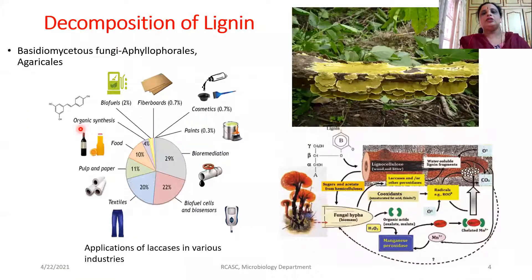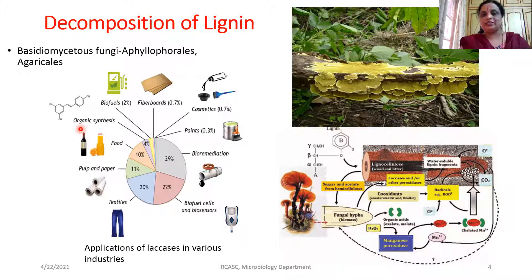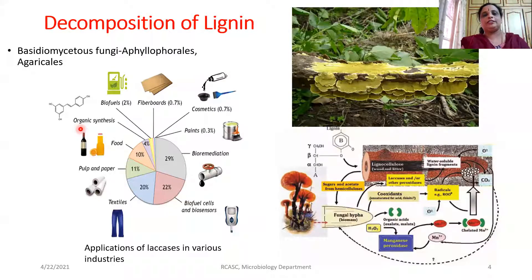We also studied the role of lignin. Lignin is one of the important polysaccharides which has been majorly used in the process of industries, especially in the process of biofuel production. This particular lignin plays a major role. Compared to all other polysaccharides, the composition of lignin is very high in plants.